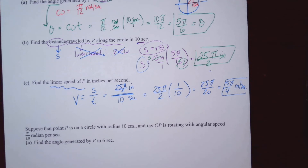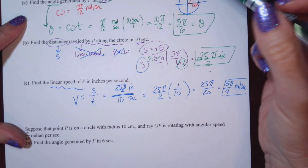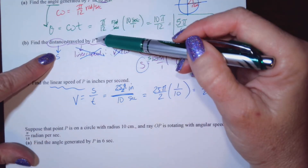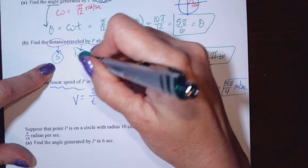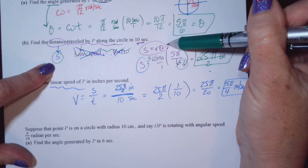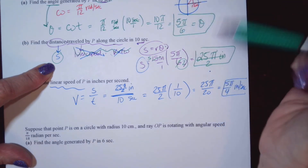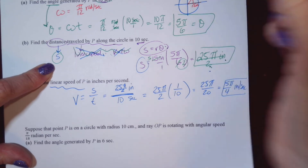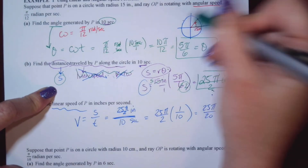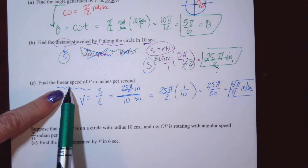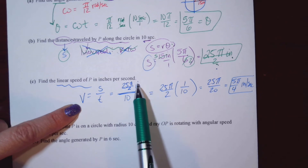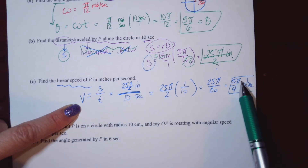To recap: we found angle theta generated in 10 seconds using theta equals omega*T. The distance traveled by P is S — not speed — using S equals R*theta; we were given R and found theta. Don't forget the denominator: 25π/2 inches is the distance around the circle. For linear speed V, we used S over T — distance traveled in 10 seconds — giving 5π/4 inches per second.